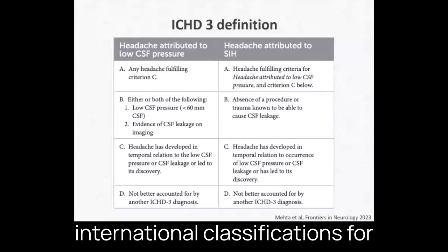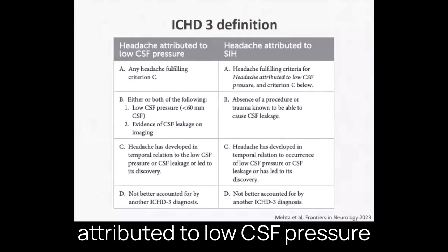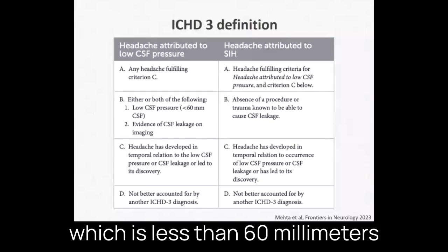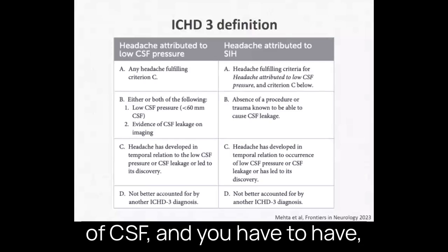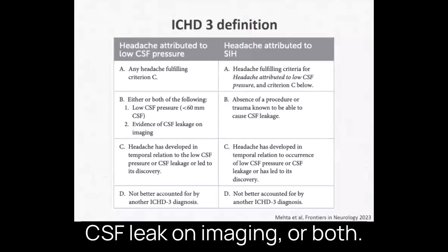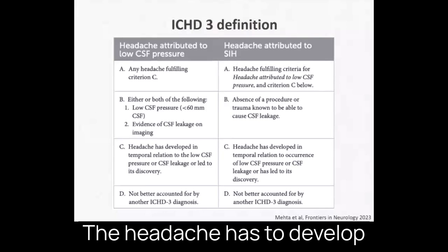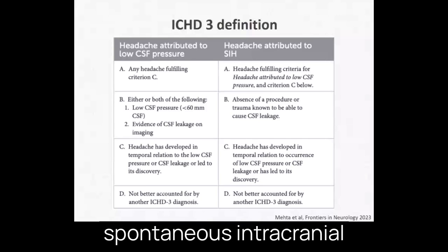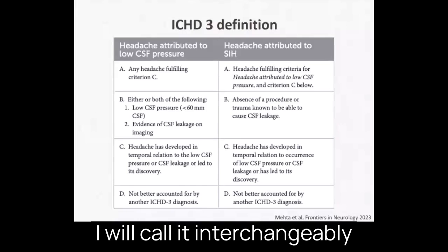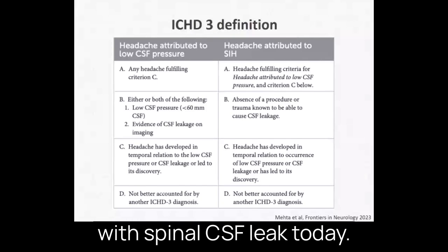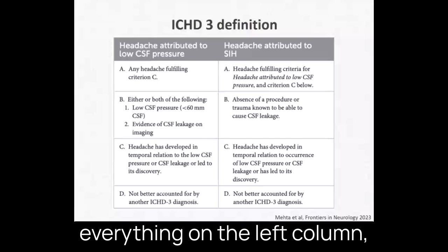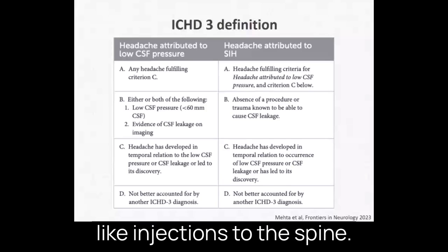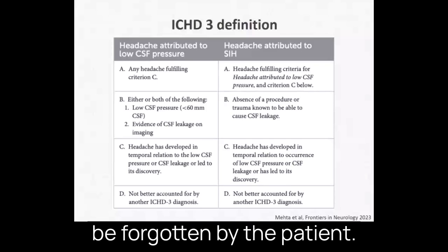According to the current international classifications for headache disorders, headache attributed to low CSF pressure can be of any kind, but you do have to have low CSF pressure — less than 60 millimeters of CSF — and evidence of CSF leak on imaging, or both. The headache has to develop following the CSF leak or can lead to its discovery. A variant is headache attributed to spontaneous intracranial hypotension, or SIH, which I'll use interchangeably with spinal CSF leak. That condition is everything in the left column, except there's no history of trauma or procedures like injections to the spine, though that history can sometimes be forgotten by the patient.